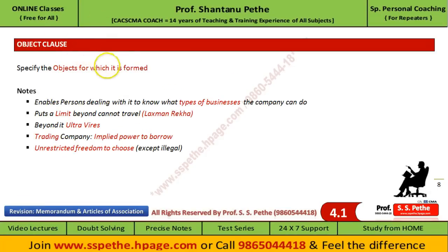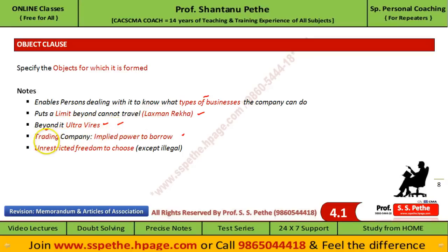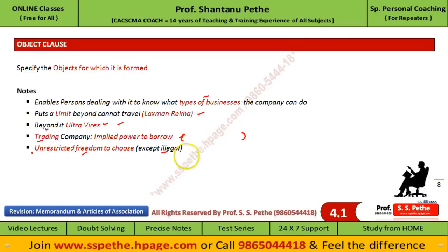In the object clause, you have to mention the objects of the company for which it is formed. Every person dealing with the company must know the type of business the company is doing. There are numerous decided case laws which say that the object clause puts a limit beyond which the company cannot travel — it is also called a Lakshman Rekha. Any act of the company which is beyond its object clause will be ultra vires and will be void. However, for a trading company there is an implied power to borrow money even if not mentioned specifically in the object clause. There is unrestricted freedom given to the company to choose its objects — the only exception is that the object should not be illegal.